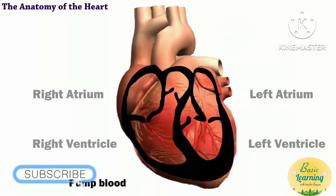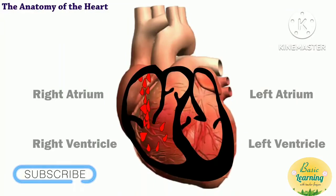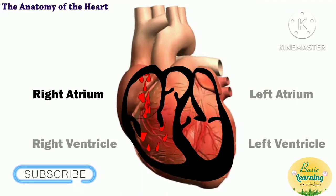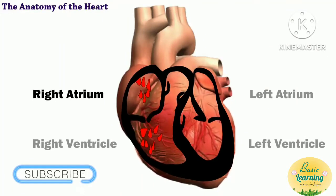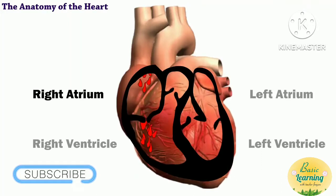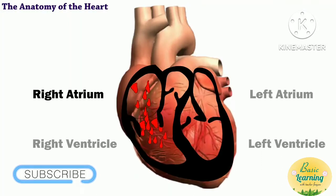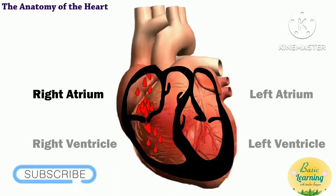Blood returning from your body's organs and tissues enters the right atrium. Because this blood has provided oxygen to your body, it is very oxygen poor.